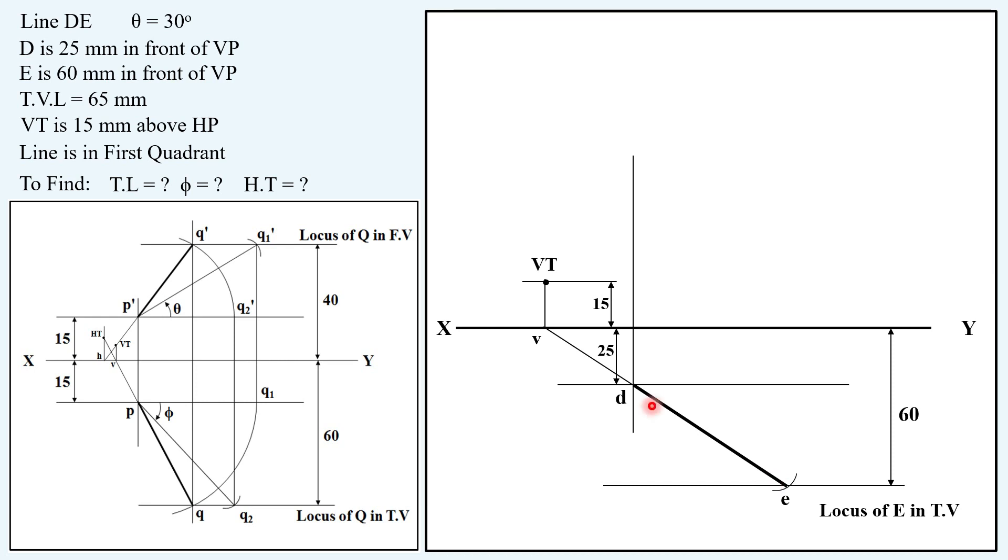Now, you do not have any front view point, that is D', from where the theta can be drawn. Now, we have used everything which was given in the question except the theta. In order to draw this theta, we have to obtain a point first. So we are not having any point given to us. Let us assume any point here on this vertical line. Because we are knowing it that on this vertical projector, where D is having its top view, on the same vertical line, you will have D'. So let us assume we are having this point where D is there.